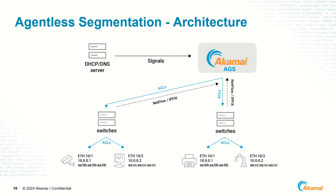Looking at the agentless high-level architecture, DHCP and DNS signals combined with network switch traffic are ingested by AGS. Discovery, visualization, and fingerprinting are performed to create enforcement policies that are sent back down to the switches as ACLs.